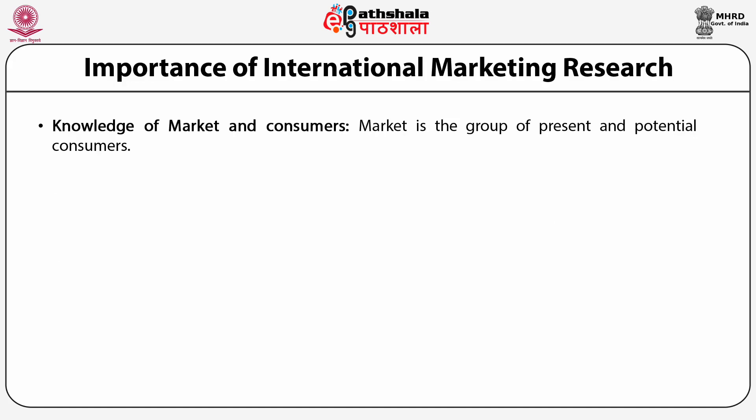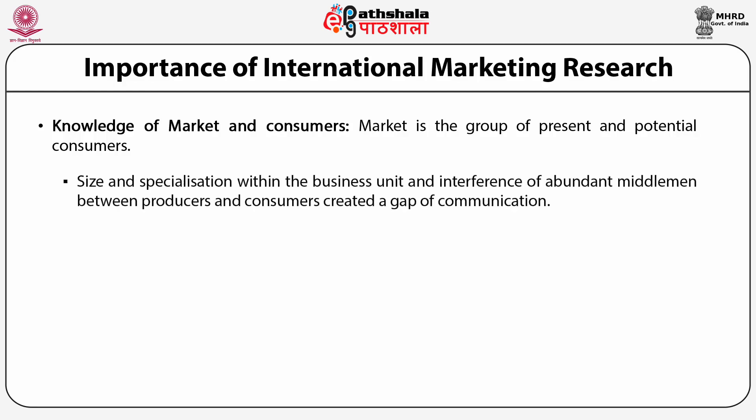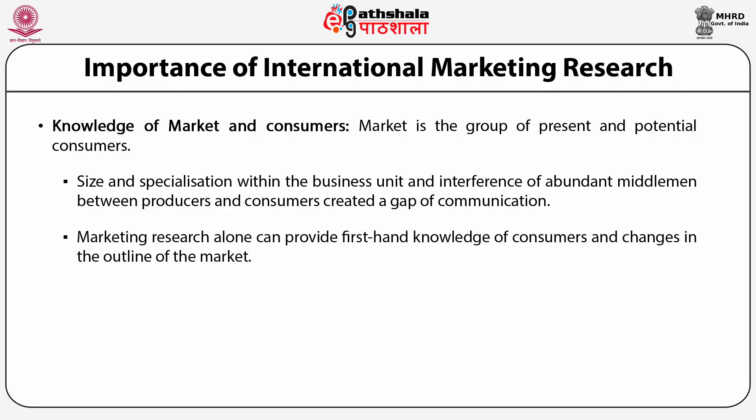Knowledge of market and consumers: market is the group of present and potential consumers. A growing market requires numerous middlemen between producer and consumer. Each middleman erects a variety of walls that block the backward flow of communication regarding consumer needs and dealer needs to the manufacturer. Size and specialization within the business unit and the interference of abundant middlemen between producers and consumers created a communication gap. Marketing research alone can provide first-hand knowledge of consumers and changes in the outline of the market.